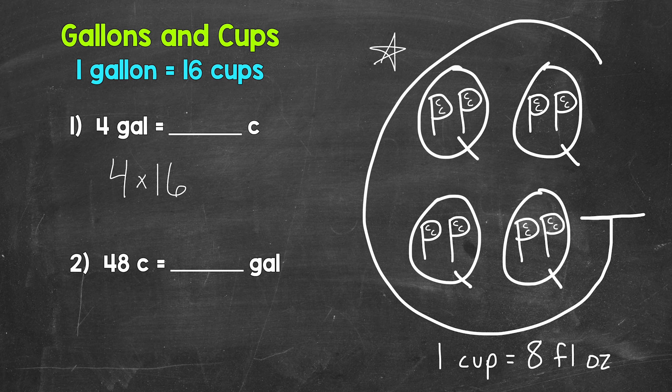Now, four times 16 gives us 64. Four gallons equals 64 cups. So again, when going from gallons to cups, we multiply by 16.